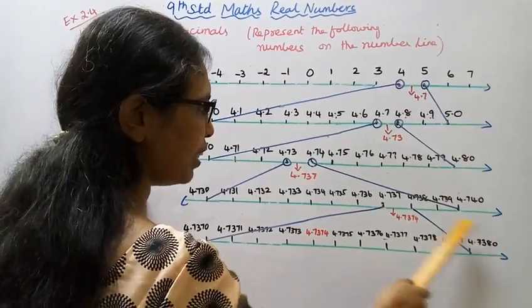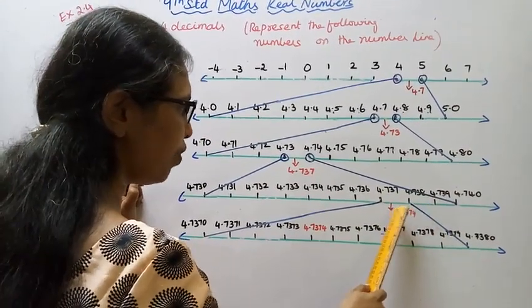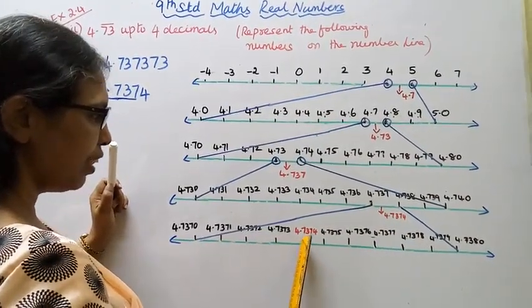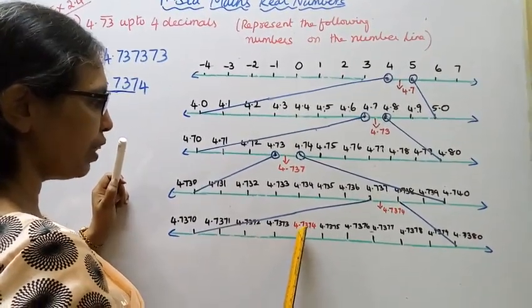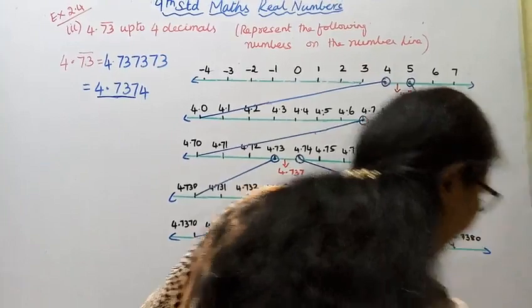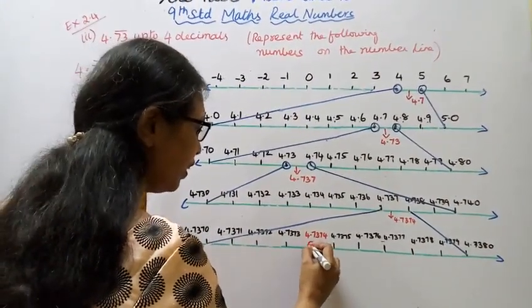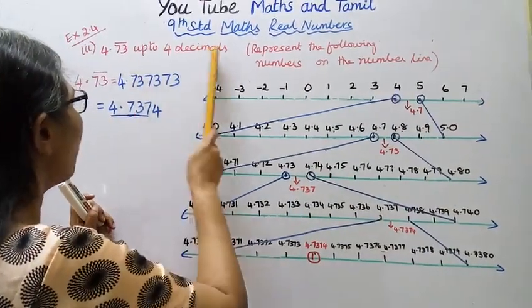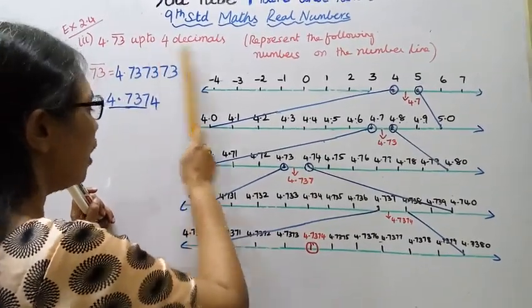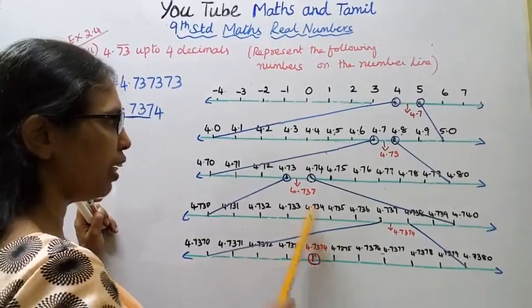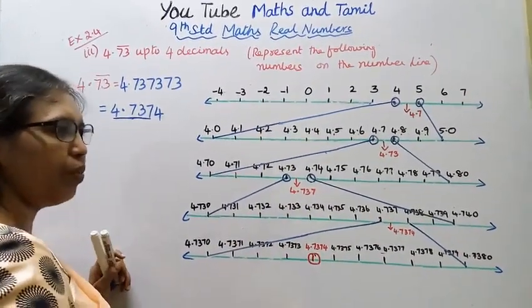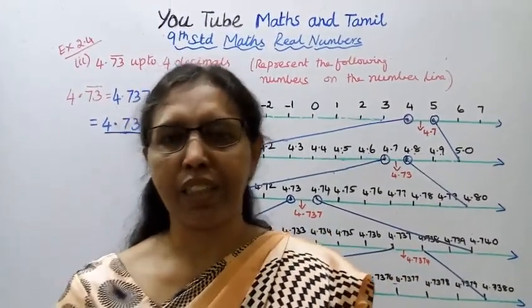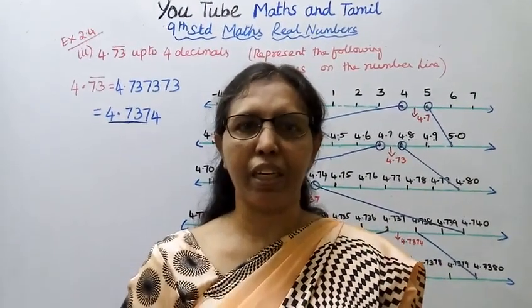4.7374 is the check point. Mark 4.7374 on the number line. This is how to represent 4.73 bar up to 4 decimals on the number line. If this channel helps you get 100 marks, subscribe, like the videos, and click the bell button. Thank you.